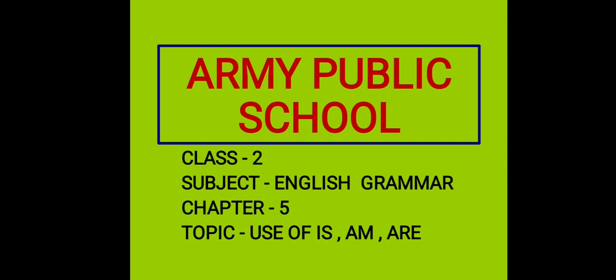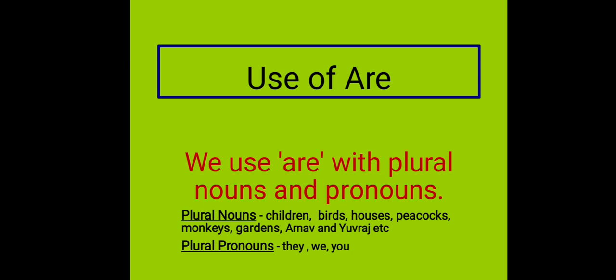In this class, we will learn when and where to use Are. We use Are with plural nouns and pronouns. Hum Are ka use plural — means bohut sara — noun or pronoun ke saath karte hain. Iska bhi wohi meaning hai jo Is, Am ka tha, yaani to exist or to be something. Kisi bhi cheez ka hona jo present mein hai, yaani abhi chal raha hai.